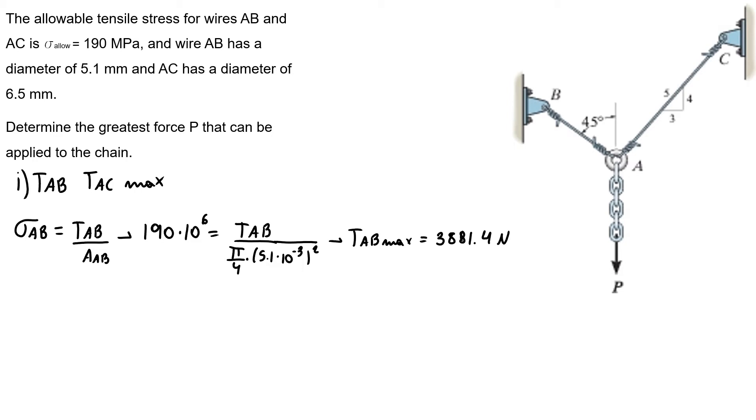Doing the same approach for our stress in AC, I have TAC over my area AC. My maximum is the same, so 190 times 10 to the 6 Pascals, TAC max over pi over 4, times 6.5 squared. So my TAC max is equal to 6304.8 N.